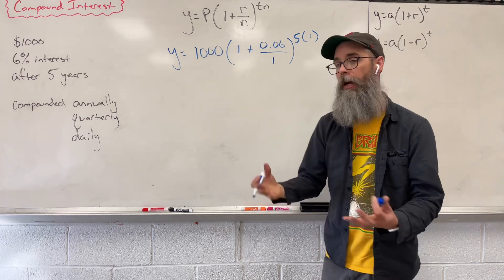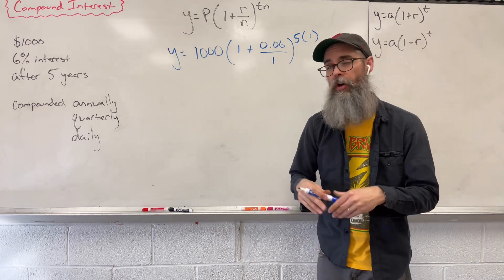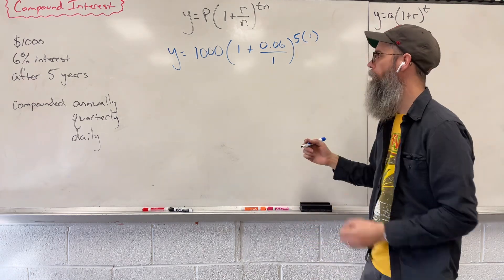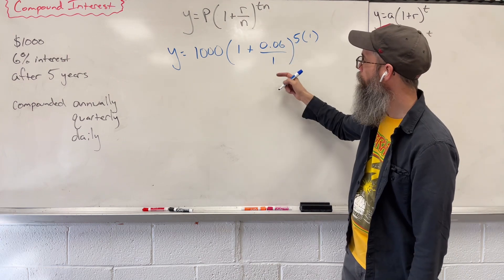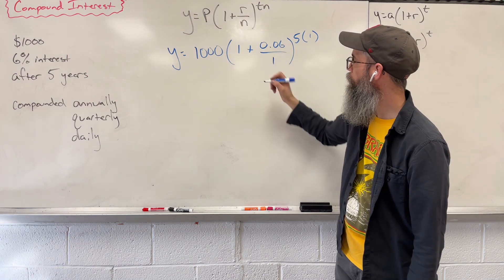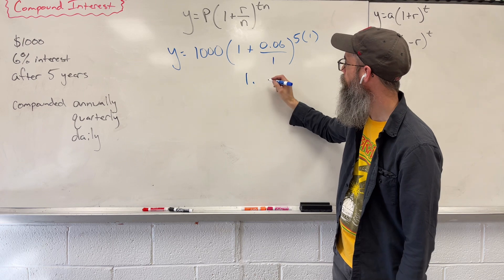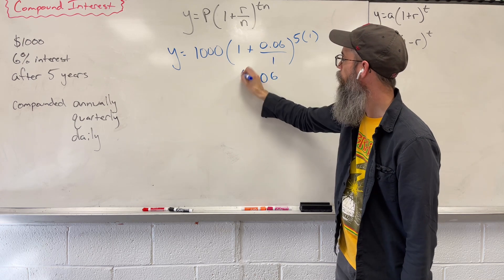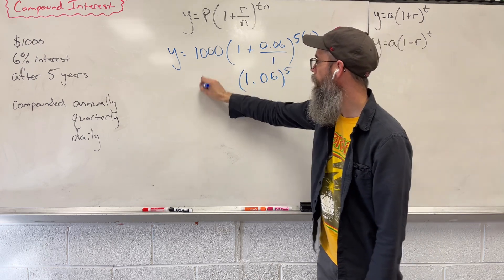Now it's just a matter of order of operations, our PEMDAS, in order to simplify this. So we divide, you're left with 0.06 plus 1, giving us 1.06. We'll raise this all to the fifth power.